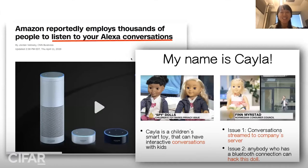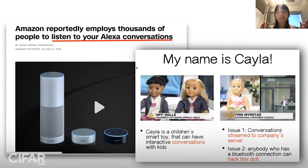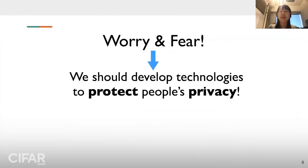Articles like these are concerning. Amazon employed thousands of people to listen to your Alexa conversations. There was also a children's smart toy called Kayla, meant to have interactive conversations with children, but it streamed conversations to the company server, and anybody with a Bluetooth connection was able to hack this doll. These examples make us worry: can I actually buy any smart devices? As computer scientists, we can work on developing privacy-preserving technologies to protect people's privacy, including our own.